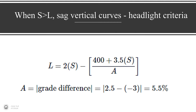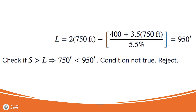First, let's solve it when the sight distance is greater than the length for SAG vertical curves. This is the equation for the headlight criteria in that scenario. Something important to note: A and G in vertical curve equations use percent units — you see them there, the 2.5 and the 3. You do not divide them by 100 and put decimals into these equations. That could give you one of those off answers we talked about earlier. So put them in as percentages — that's really important. Once you know that, you literally plug in and solve.